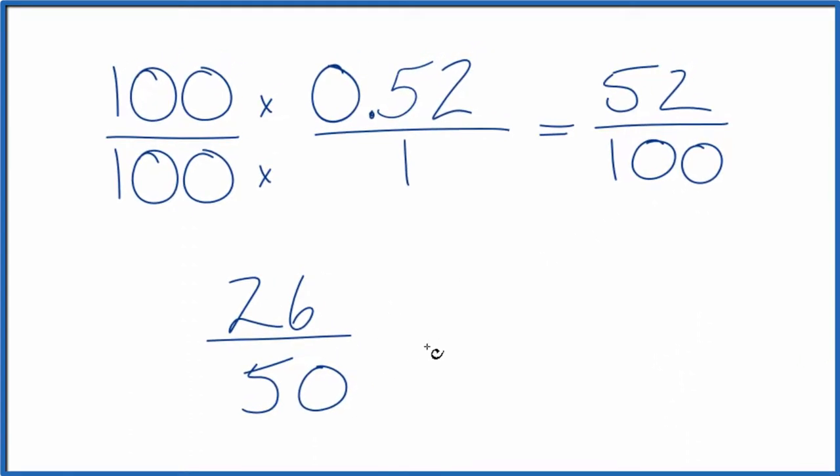We can still simplify this further, though, because these are both even numbers. 26 divided by 2 is 13. 50 divided by 2, that's 25. And we can't reduce this any further.